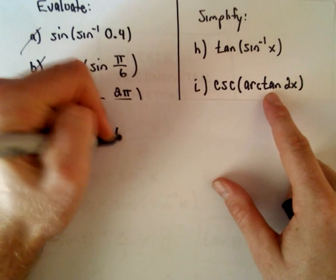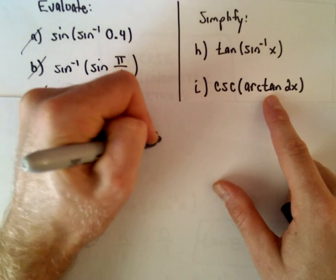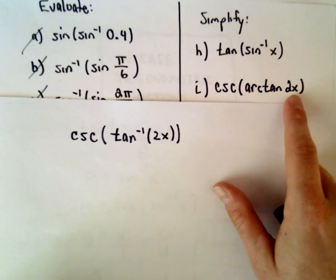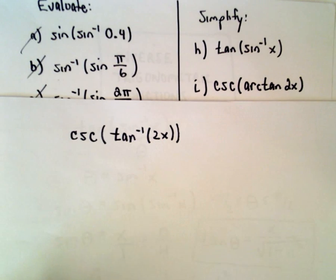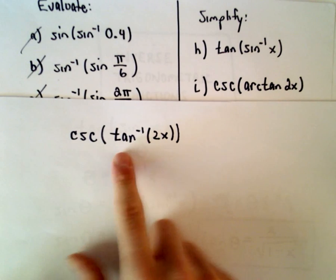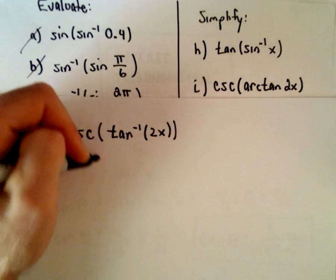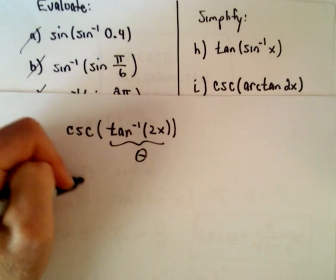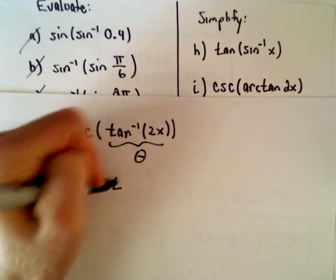So we've got cosecant of arctangent of 2x. Well, I'm going to rewrite this as inverse tangent of 2x. Again, arctangent of 2x and the inverse tangent of 2x - exact same thing. I just prefer this notation.